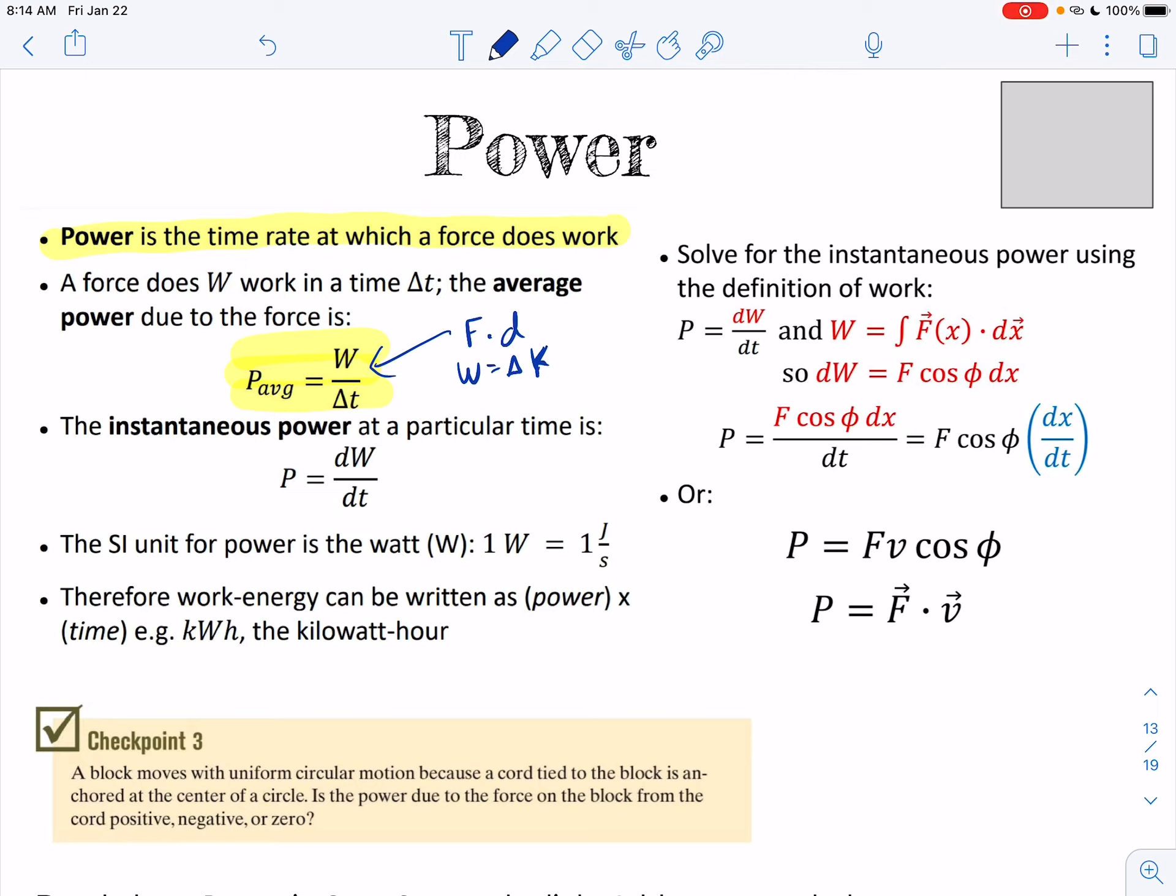But basically, if it's a power question, the first thing you're going to want to do is find the work in some form. And then that's for average. If you want instantaneous, we have to look to calculus, and then we'd say power is the derivative of work with respect to time.